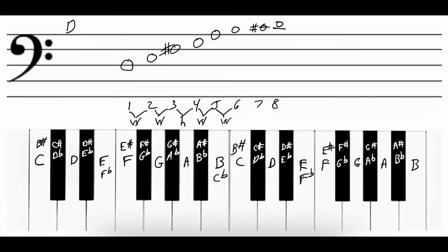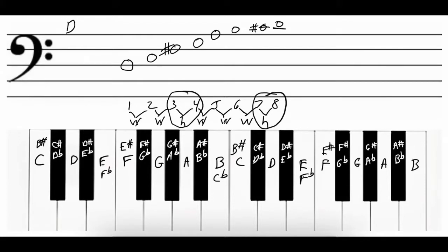Between the fifth and the sixth note, A to B, is a whole step. Between the sixth and the seventh note, B to C-sharp, is a whole step because we skipped over C, and between the seventh and the eighth note, C-sharp and D, is a half step. The two places in the D major scale that have half steps are between the third and the fourth note and the seventh and the eighth note. Every major scale has whole steps except between the third and the fourth and the seventh and the eighth notes.